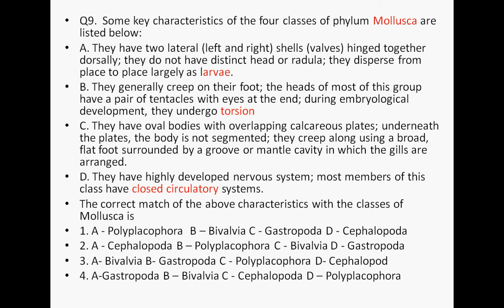Question nine covers characteristics of four classes of Mollusca — the second largest phylum of the animal kingdom. The first class has two lateral shells joined dorsally, no distinct head or radula, and disperses via larvae — these are Bivalvia. The second class shows torsion, which is a peculiarity of Gastropoda. The third one has an oval body.